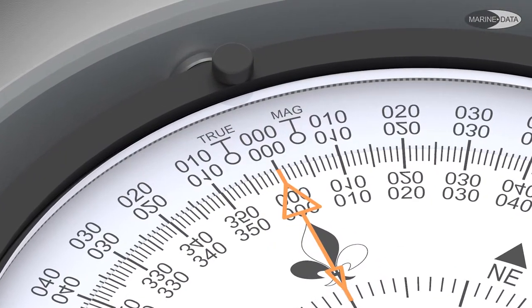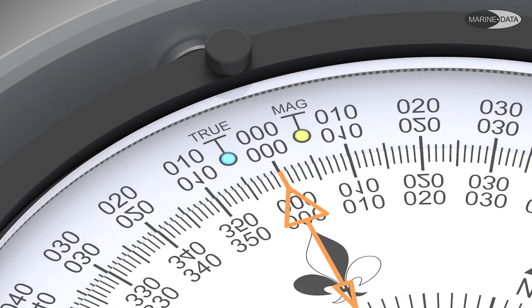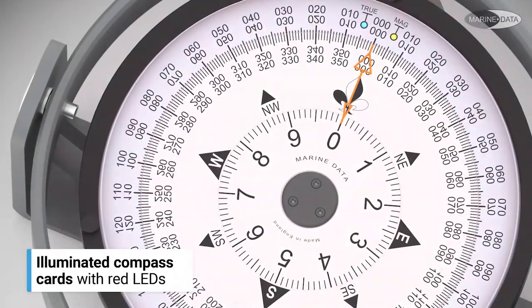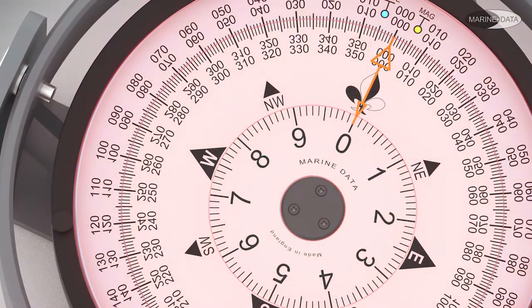Heading source indication is shown by a blue or yellow LED for either true or magnetic heading. Both compass scales are illuminated with red LEDs and can be dimmed by either integrated or remote control.